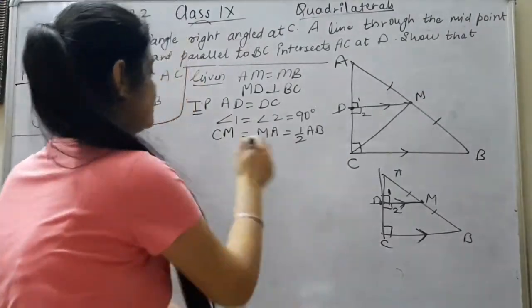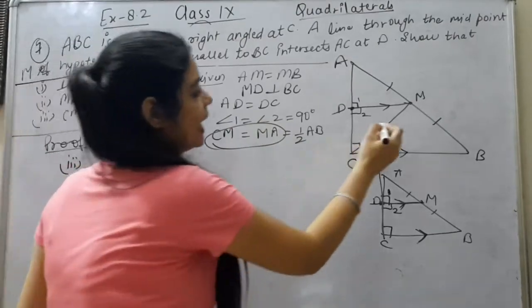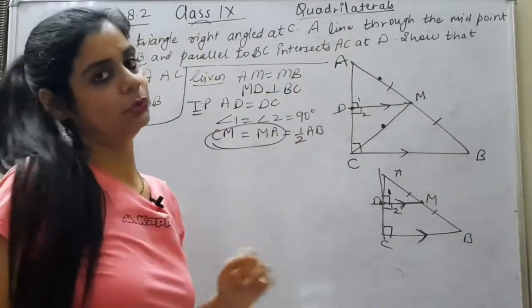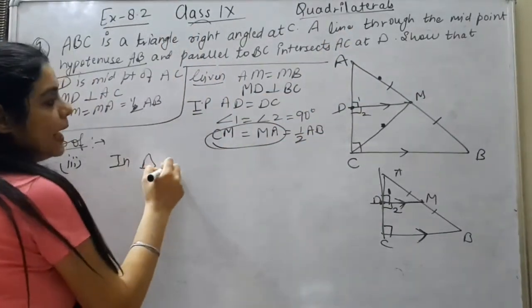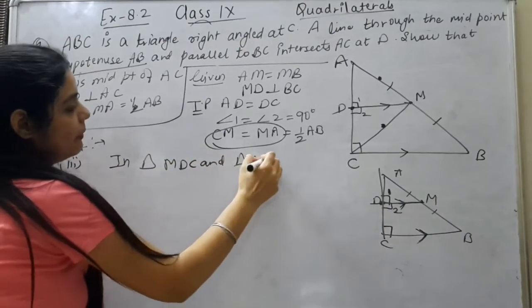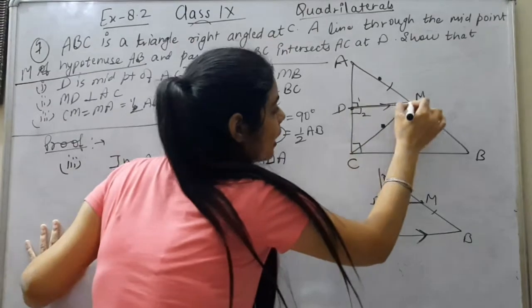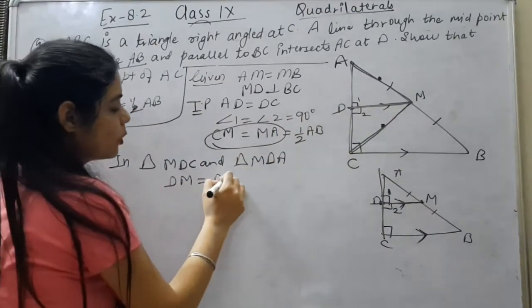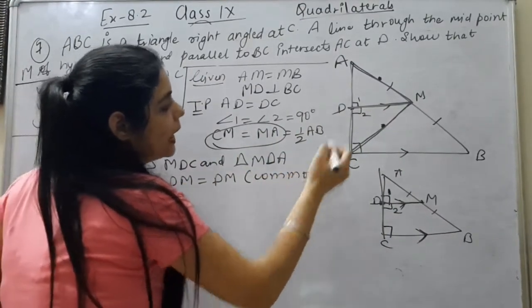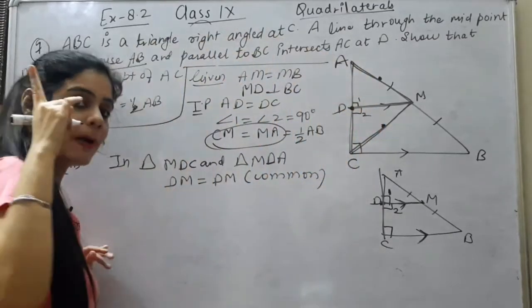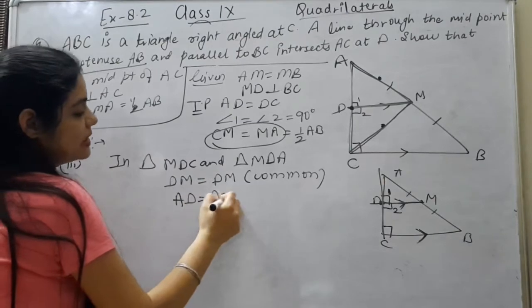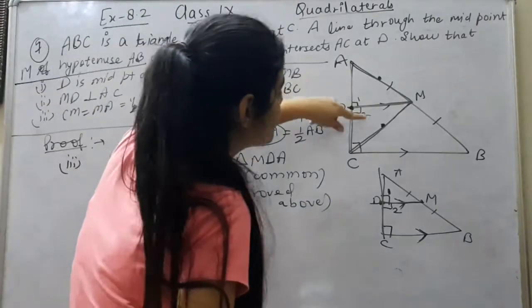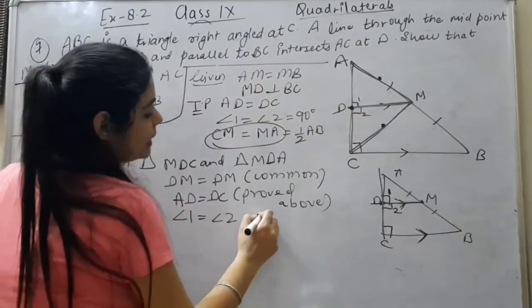Let's do that. We have to prove basically that CM equals MA, that means this is equal to this. It's very easy, this triangle and this triangle. In triangle MDC and triangle MDA, look at this triangle and this triangle. DM equals DM common. And D is the midpoint we have proved in the first part. AD equals DC, we have proved above. And also angle 1 equals angle 2, I have proved in the second part, 90 degrees each.